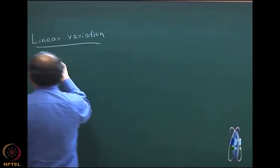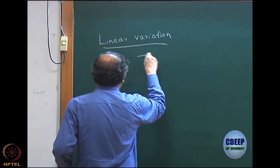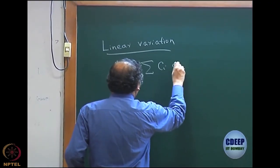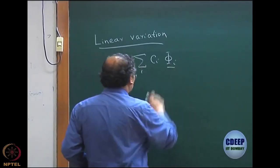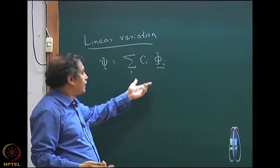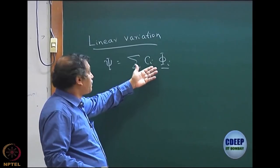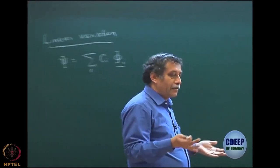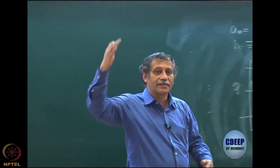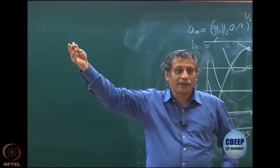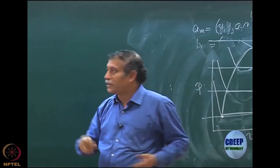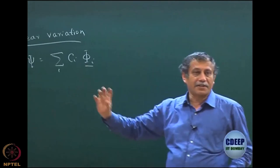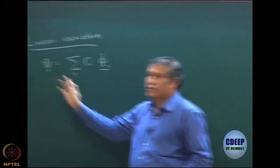If you vary the wave function which is expanded linearly in a basis — the basis functions are known, the coefficients are the only unknowns — that is what we mean by linear expansion. Of course, if you change the basis function, then it is no longer linear dependence, because your basis usually contains exponential terms in r. So you have to change the exponent, just like in the hydrogen atom. Usually they are not linear parameters.